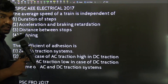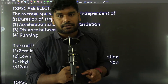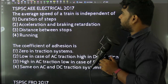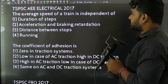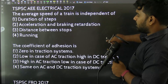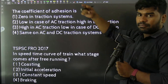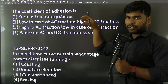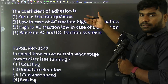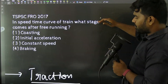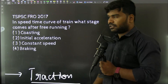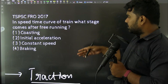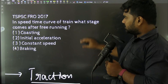From TSSPSE AWE (Assistant Works Engineer) electrical in 2017, the irrigation department exam covered the average speed concept and Coefficient of Adhesion. Finally, TSSPSE FRO — Forest Range Officer recruitment — also has a question on the speed-time concept.